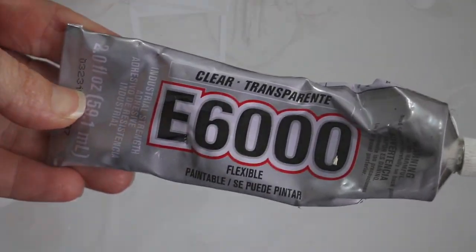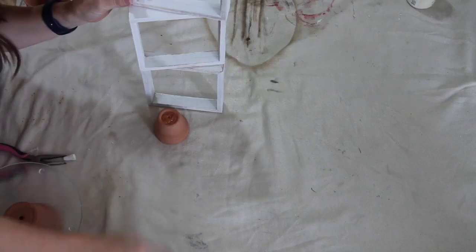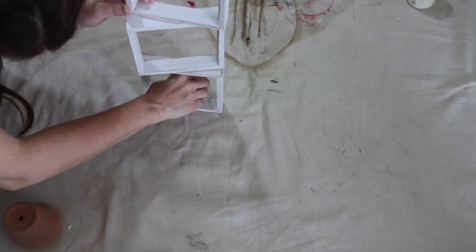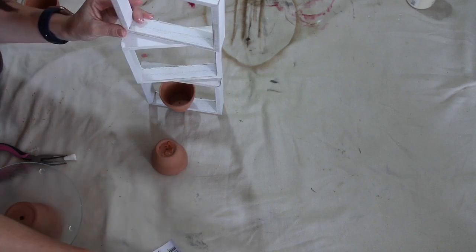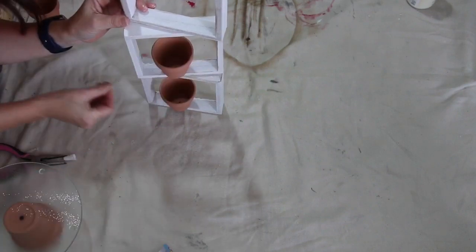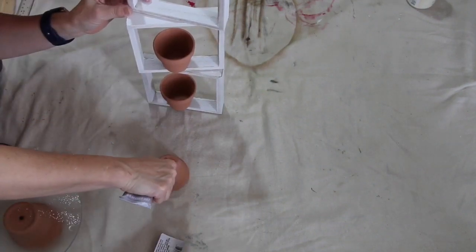Going in with some E6000 and taking the mini clay pots. I am stacking one clay pot on each one of the little boxes and again giving this plenty of time to set up and dry.